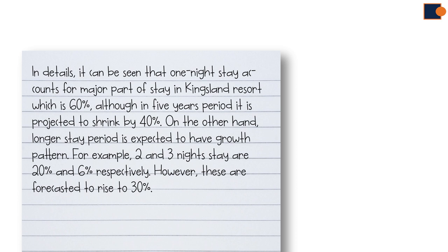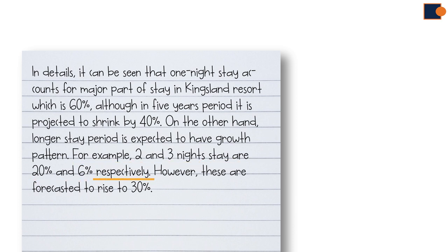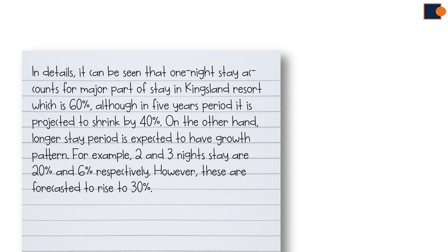The second sentence begins with the phrase 'on the other hand,' which is mainly used to explain a contrast of two opposite ideas. Here in the example, it gives an opposite change which is growth, and again gives support with data showing current and future changes. Support statements start with 'for example' or 'for instance' phrases — this is very useful for giving an example. Then it states two and three night stays are twenty and six percent respectively. The word 'respectively' means the numbers are orderly relevant to previous words — two nights is 20%, three nights is 6%.